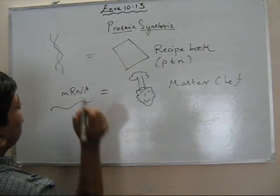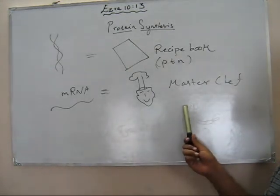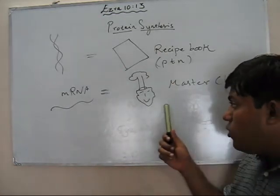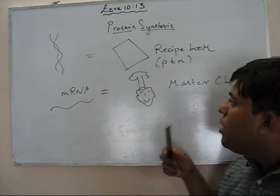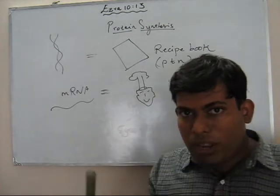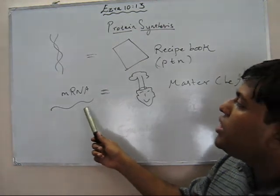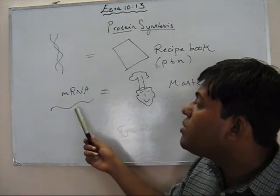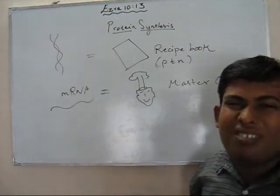Similarly, the mRNA molecule — a single-stranded molecule — is not going to make the protein by itself, but it is going to have the information transcribed from the protein recipe manual, the blueprint, otherwise called DNA.